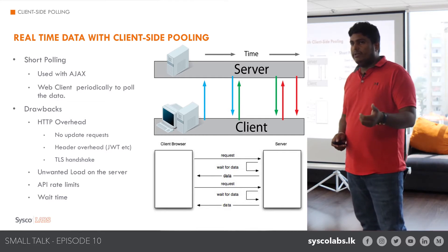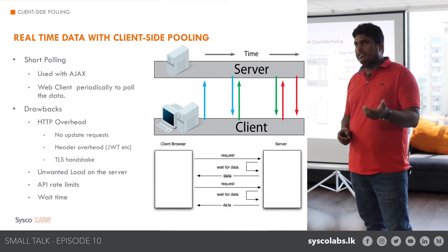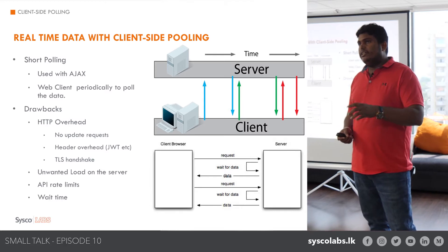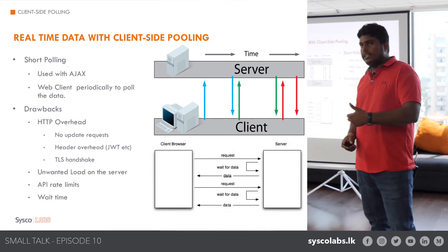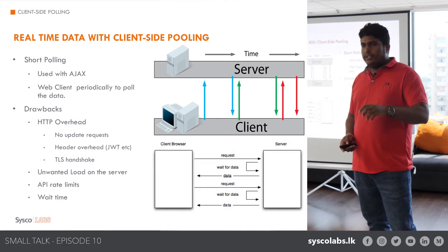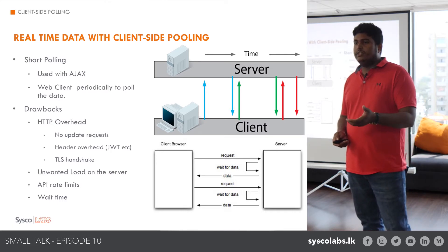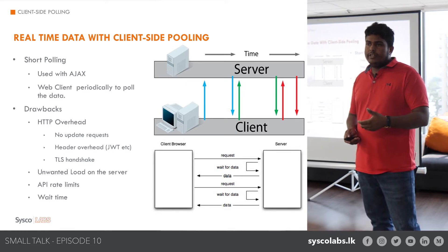There are some drawbacks associated with those approaches. Number one is HTTP overhead. If you consider an application with maybe thousands of users, think about the network traffic you are generating. Especially if you are dealing with HTTPS, for each and every request there is going to be a TLS handshake. Some applications also use headers like JWT, which carries a lot of information, making the header size larger than normal and impacting your network traffic.